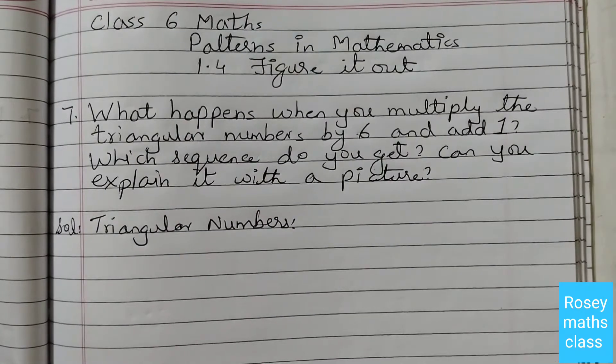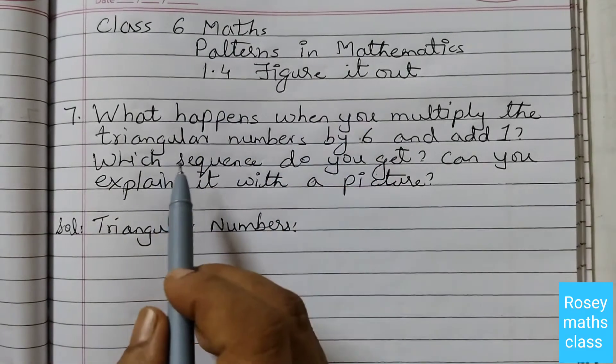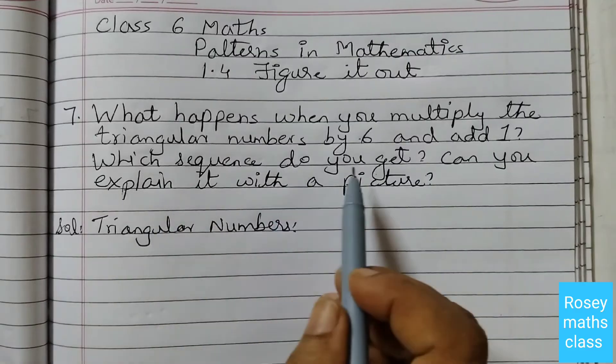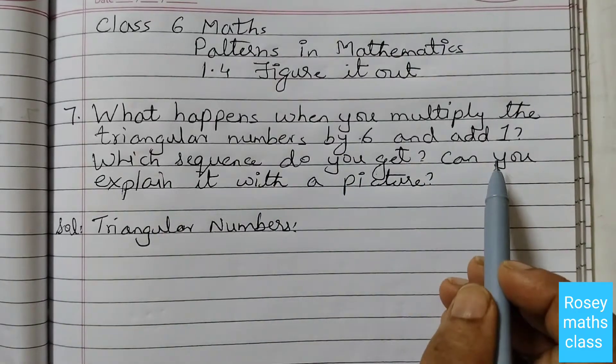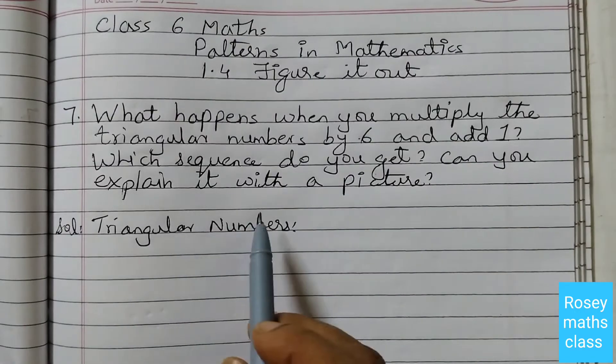Hello students, today we shall discuss question number 7 of 1.4 figure it out. What happens when you multiply the triangular numbers by 6 and add 1? Which sequence do you get? Can you explain it with a picture?